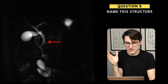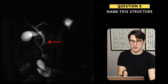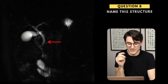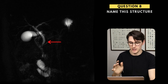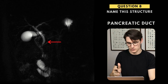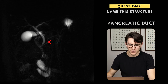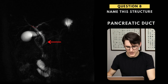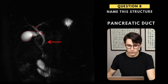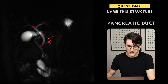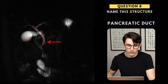Question eight. This is an image you may not have been familiar with — it's an MRCP, magnetic resonance cholangiopancreatography. We are viewing the biliary tree, and the structure indicated is the pancreatic duct. Looking at the biliary tree, we have our left and right hepatic ducts forming the common hepatic duct. The gallbladder gives off the cystic duct, which joins the common hepatic duct to give the common bile duct. The pancreatic duct — sometimes with an accessory duct — inserts into the duodenum at the ampulla of Vater.